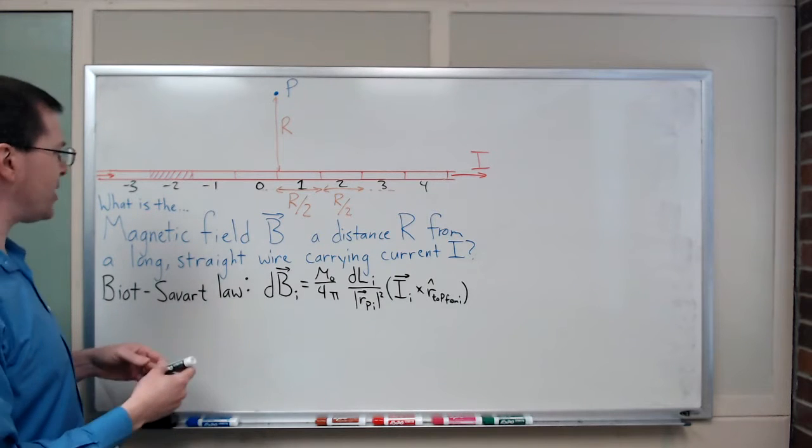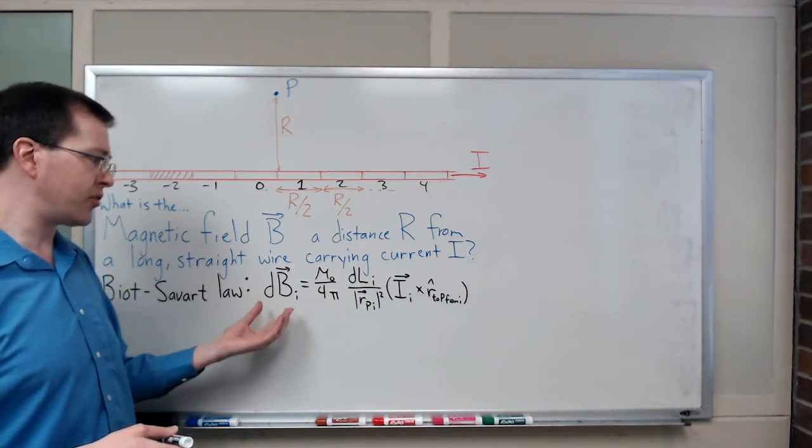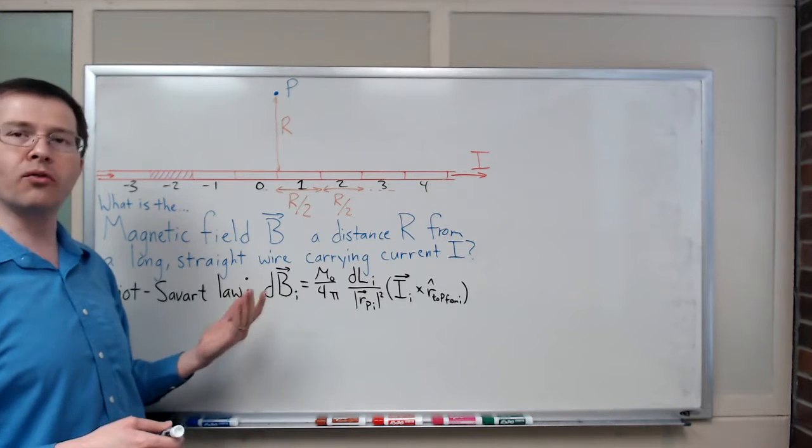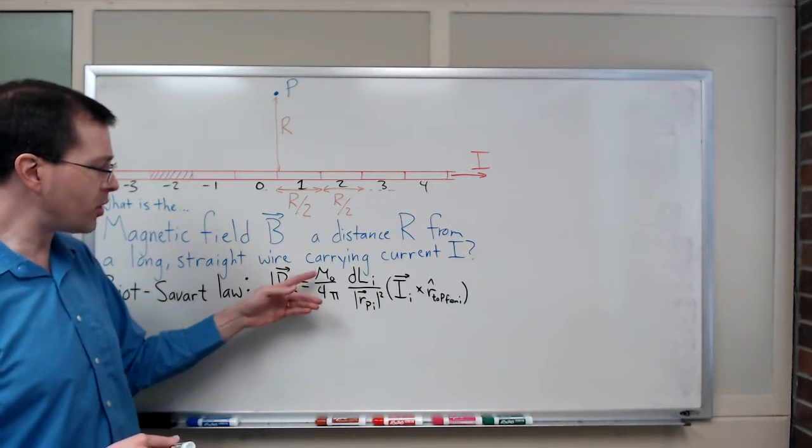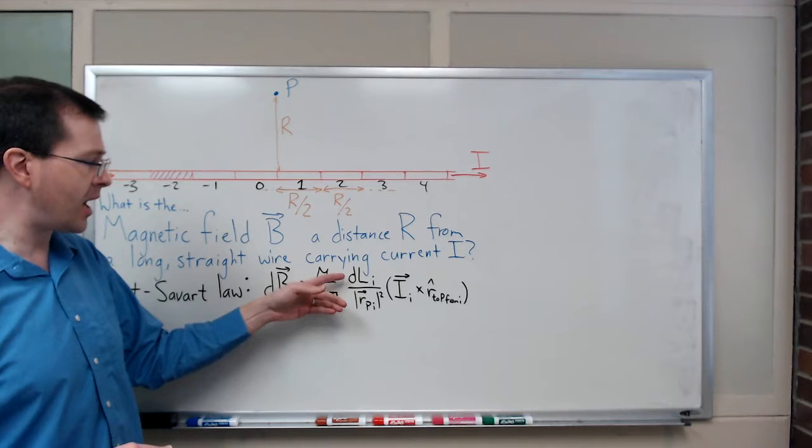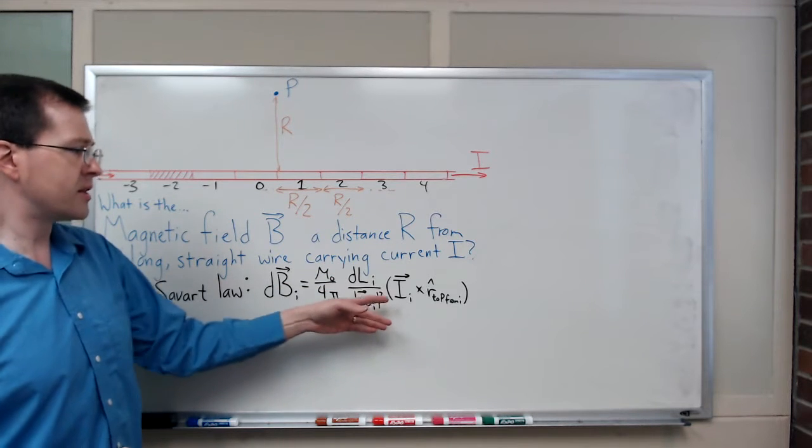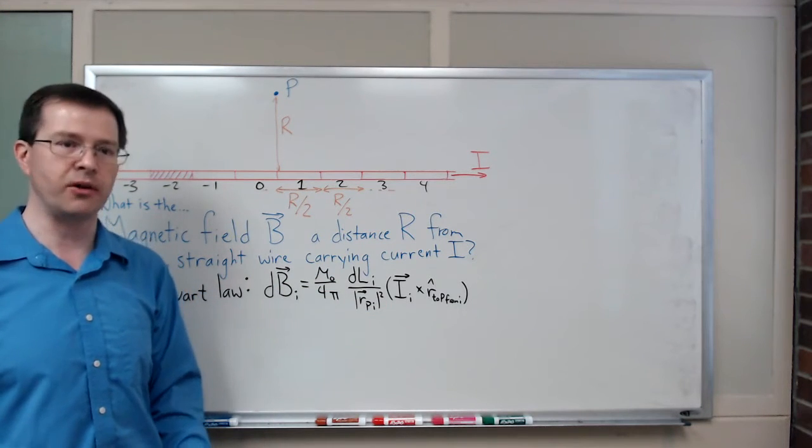Doing this, I want to use the Biot-Savart law to figure out the contribution of that piece to the overall field. Here's the formula: mu naught over 4 pi times dL I over R squared times I cross r hat. Lots of symbols in the formula.